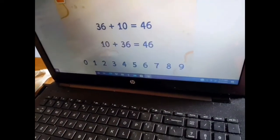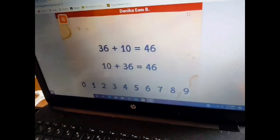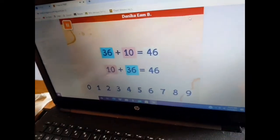10 plus 10 equals 46 and 10 plus 36 equals 46. If we change the order of the items, the sum does not change.